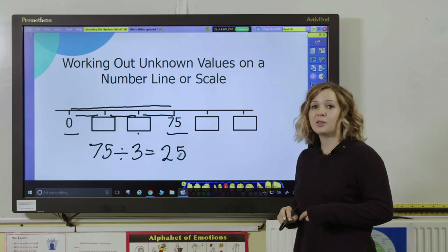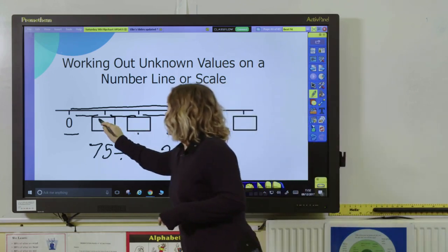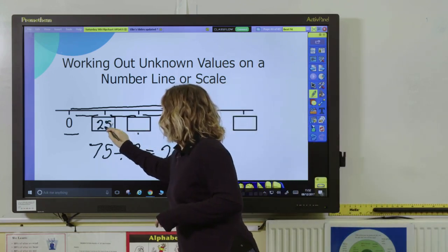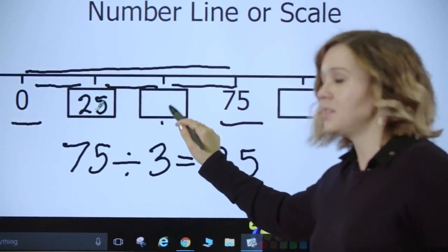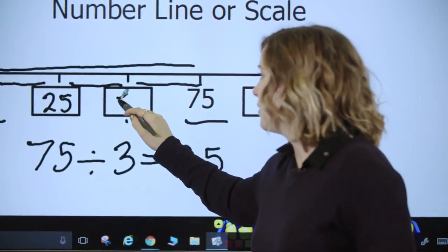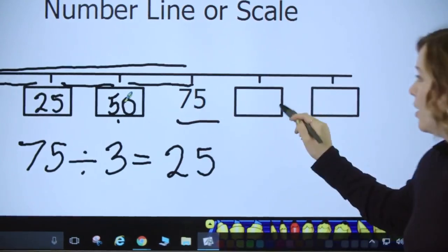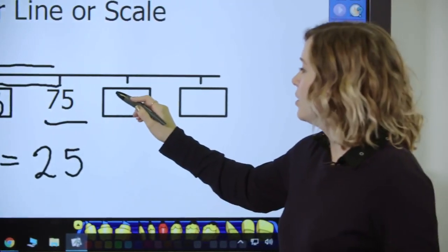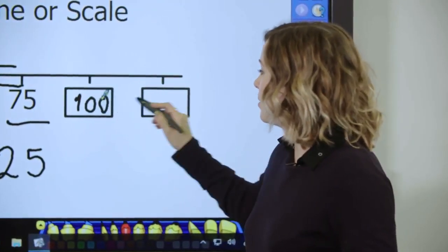Which means that you can pop your answers on the scale then. So you know this one is 25. If each part is worth 25 then 25 add 25 is 50. So they know that the pattern is that we're adding on 25 each time.